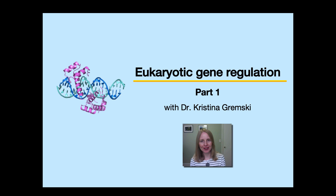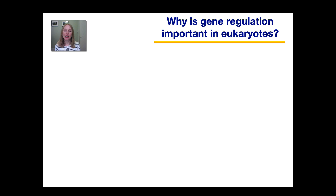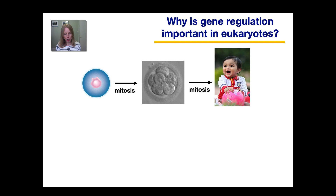So why is gene regulation important? In a previous lesson I told you that in prokaryotes, gene transcription needs to be regulated for cells to be able to respond to changes in their environment. Well, that still applies to eukaryotes as well, but eukaryotes have an additional need for gene regulation. Many eukaryotes are multicellular, so the incredible variety of cells in a multicellular organism, such as this cute baby, arose out of a single fertilized egg.